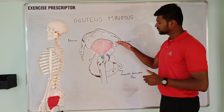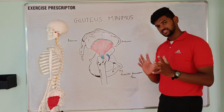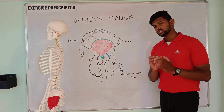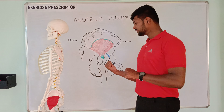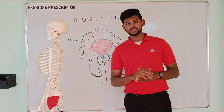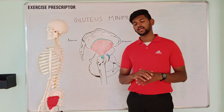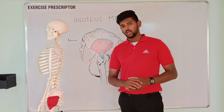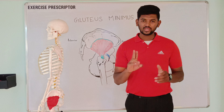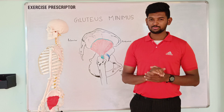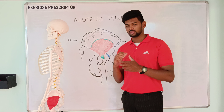The proximal attachment of gluteus minimus is the more fixed attachment, so it is called the origin. Gluteus minimus and gluteus medius have a similar sort of function and movements. I am going to explain two functional key differences between gluteus medius and gluteus minimus.